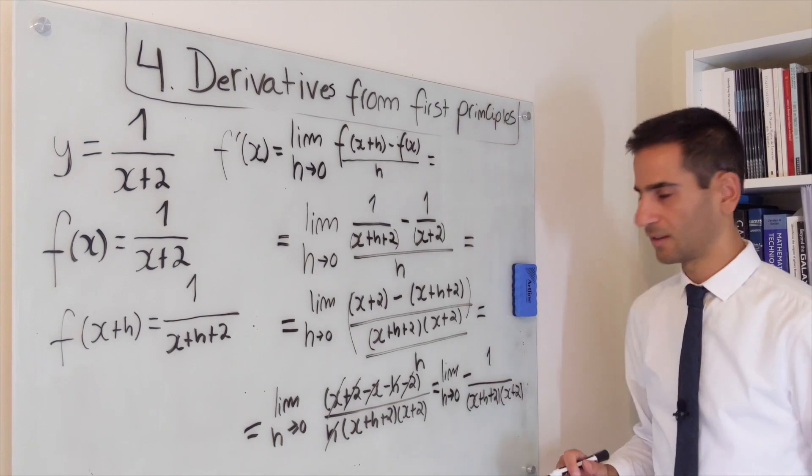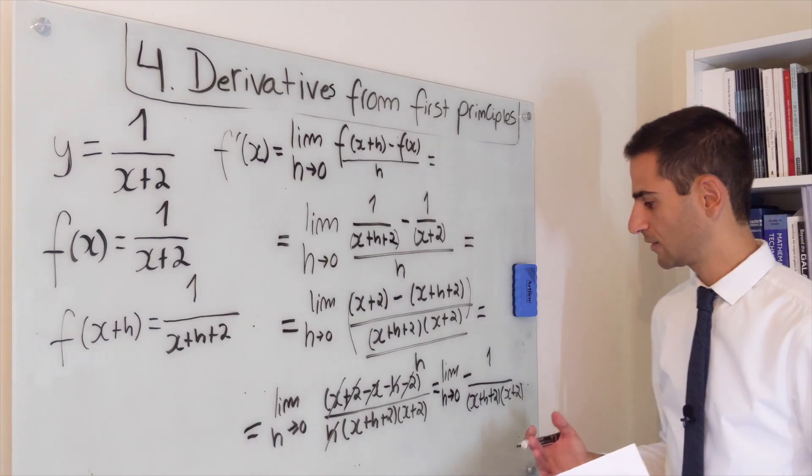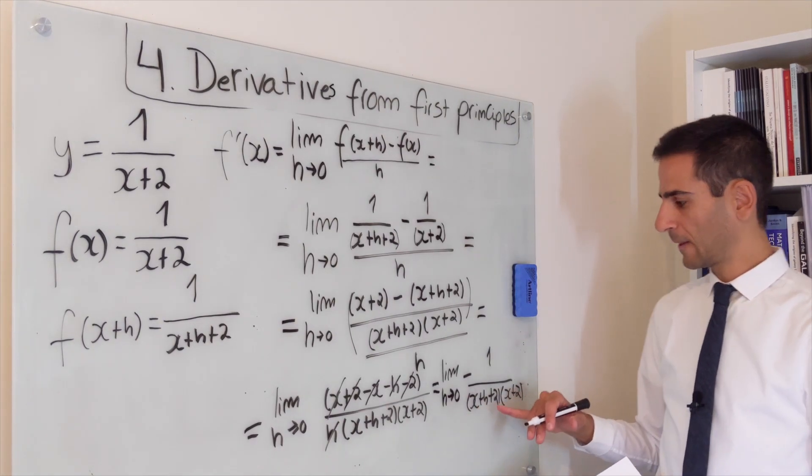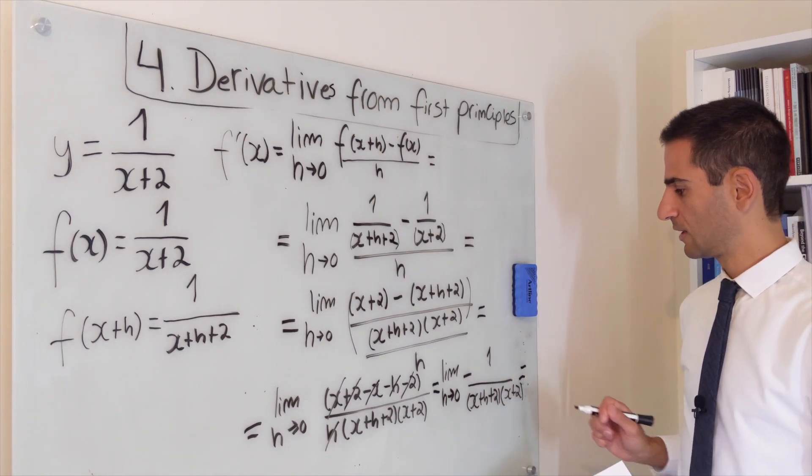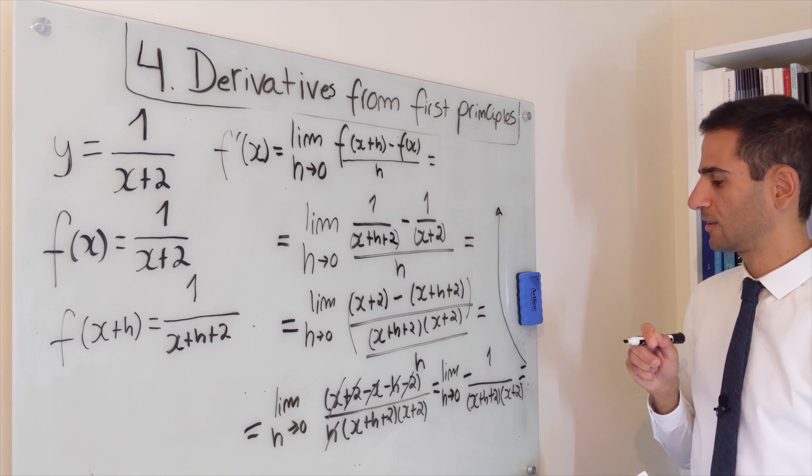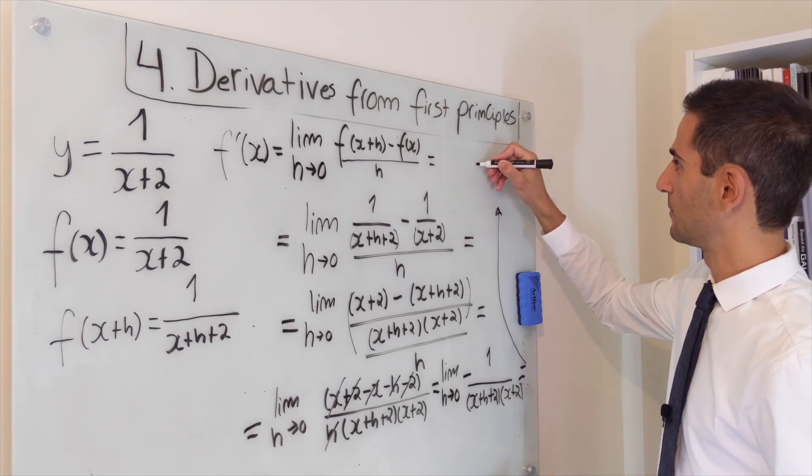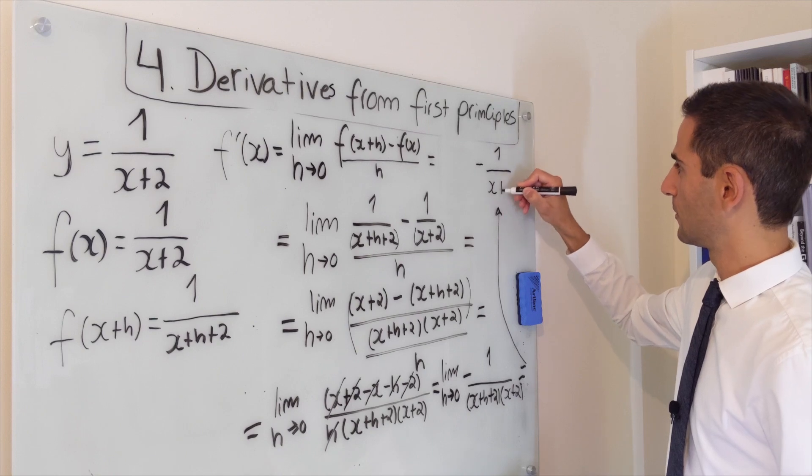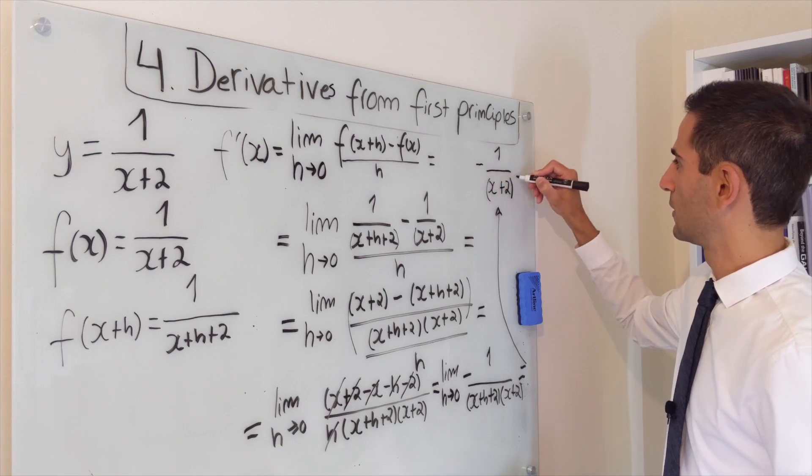And you can see that now the limit is relatively straightforward to calculate. If you plug in h here, it will go to 0. And the result is very simply, and I'll put it here so it's more legible, the result is simply minus 1 over x plus 2 squared.